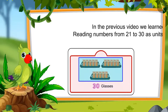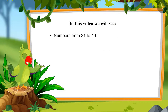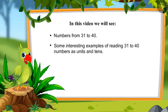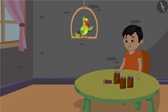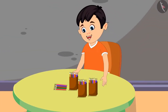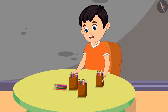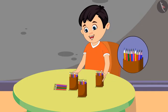In this video, we will see some interesting examples of reading numbers from 31 to 40 and reading those numbers as units and tens. Today, Chotu went to buy pencils from the market. Let's see what he is doing with them now. Chotu said: 'Now I have a lot of pencils with me. I will count all the pencils. Firstly, here is a box of pencils with 10 pencils, that is 1 ten.'